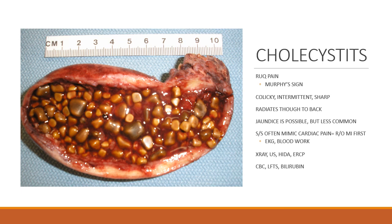In cholecystitis — inflammation of the gallbladder, here seen packed full of stones — the patient often reports right upper quadrant pain and what we refer to as a Murphy's sign, also called inspiratory arrest. You press your hand in the upper epigastric area, pushing up and underneath the ribs on the patient's right side. Have the patient exhale, get your hands underneath the rib cage, and have them take a deep breath in. They'll catch their breath — like they can't take a deep breath — and that's a positive Murphy's sign.